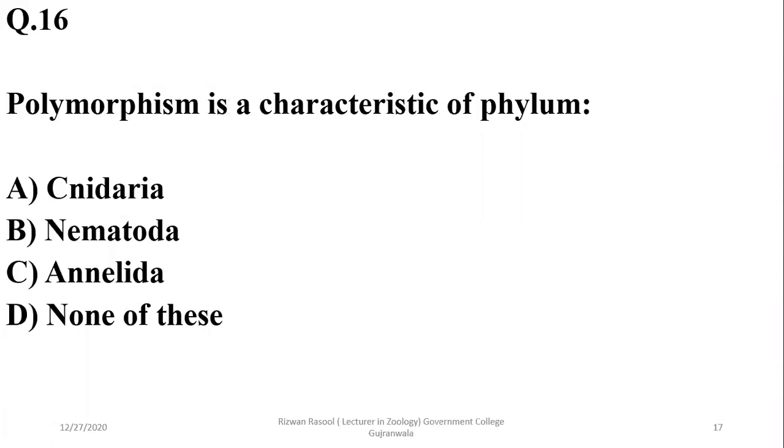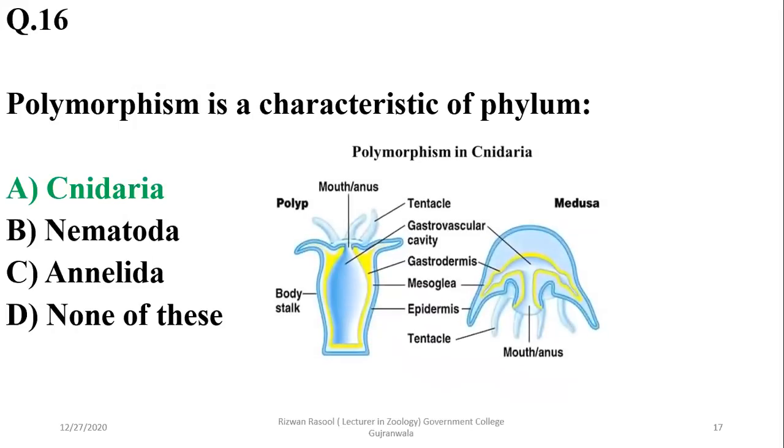Question 15: Polymorphism is a characteristic of phylum Cnidaria (Niderian), which exhibits medusa and polyp forms.